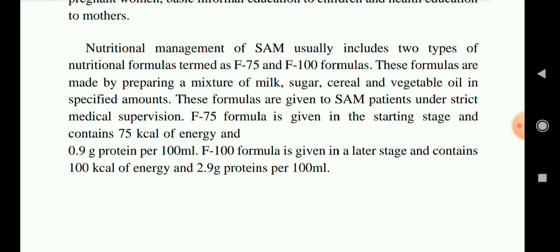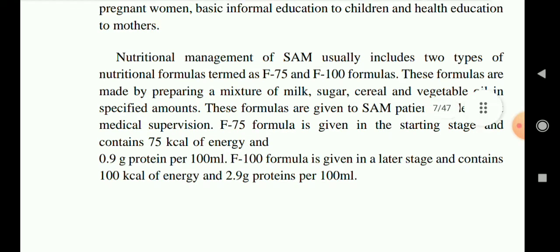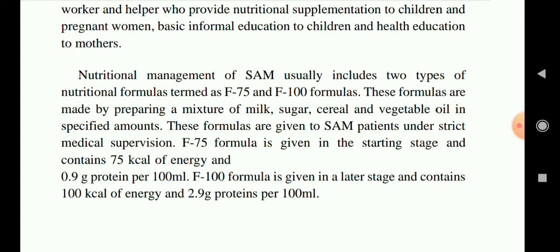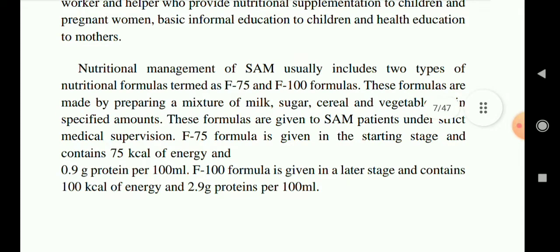Nutrition management of SAM usually includes two types of formulas: F75 and F100. These formulas are made by preparing a mixture of milk, sugar, cereal, and vegetable oil in specified amounts, given under strict medical supervision. F75 is given in the initial stages, providing 75 calories and 0.9 grams of protein per 100 ml. F100 is given in later stages, providing 100 calories and 2.9 grams of protein per 100 ml.